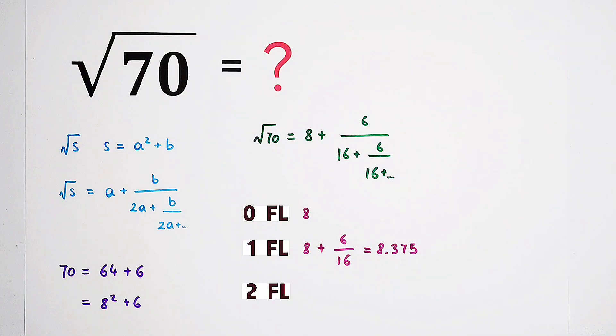If we take two fractional lines, it is 8 plus 6 over 16 plus 6 over 16. Since we know that this guy is 0.375, the denominator is 16.375. Then you can see the result is going to be approximately equal to 8.3666.